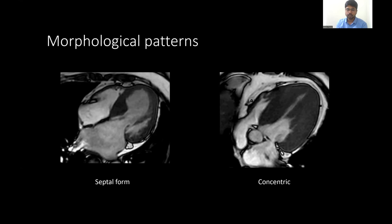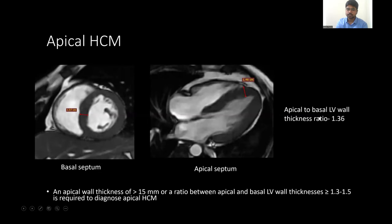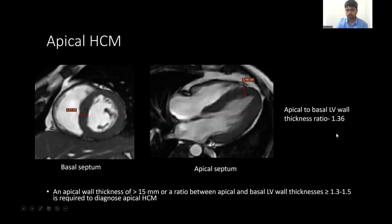There are different morphological patterns. The most common one is septal form. The other common ones are concentric variety, midventricular type, and apical type. In general, the apex is thinner when compared with basal and midsection, so a 15 mm mark may not be reached in all cases of apical HCM. For this, we can use the ratio between apical septal thickness and basal septal thickness — if it is more than 1.3, it favors the diagnosis of apical HCM. In this case, the ratio was 1.36.